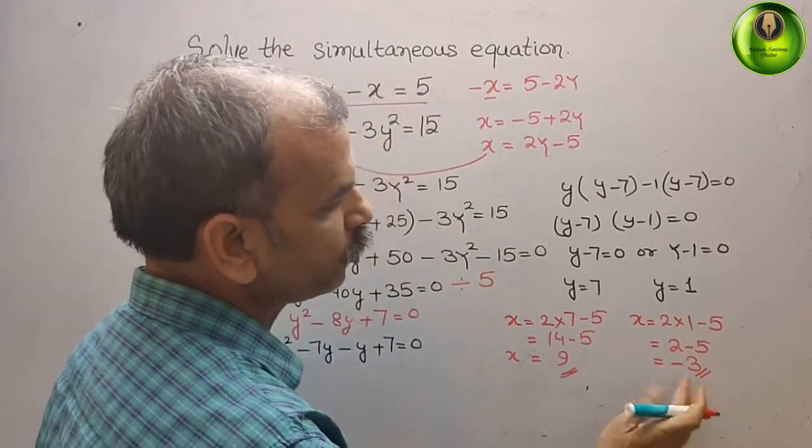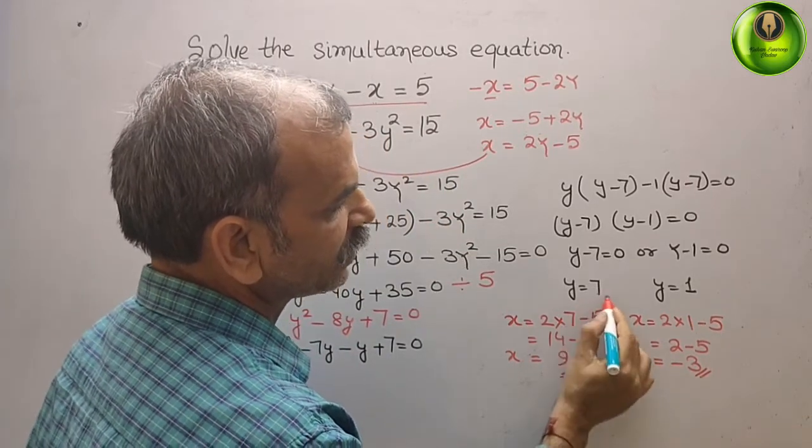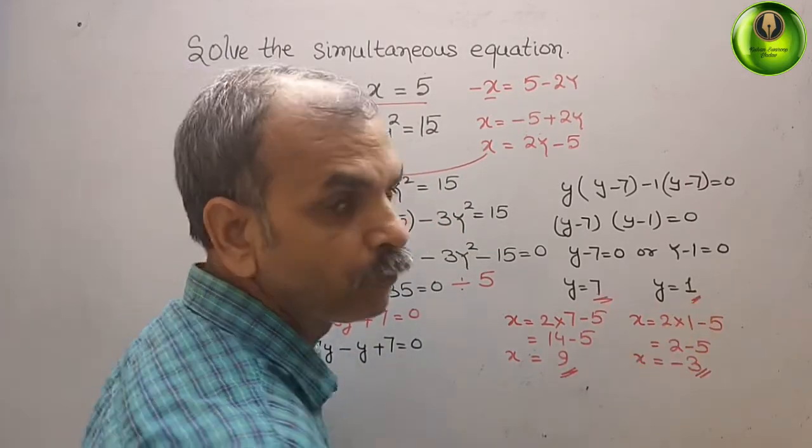So these are the two solution pairs: x equals 9, y equals 7, and x equals minus 3, y equals 1.